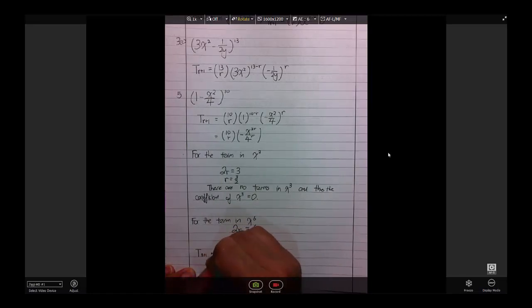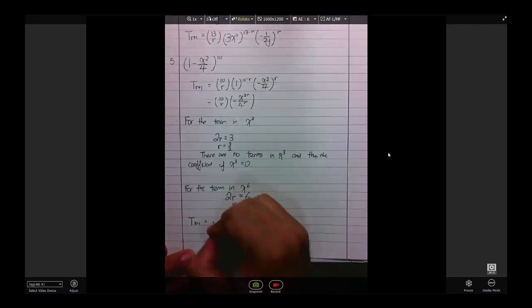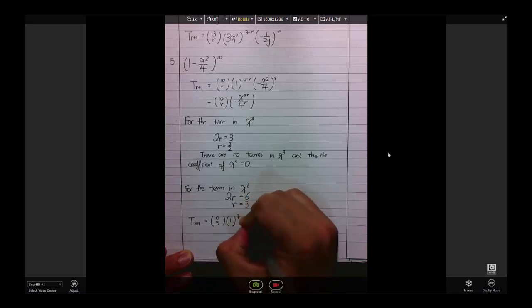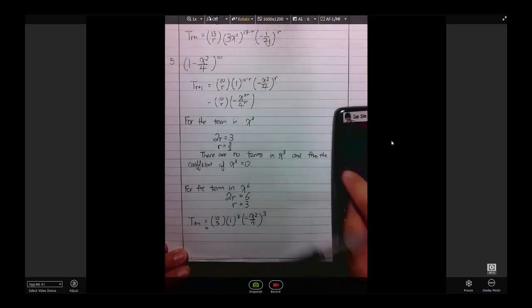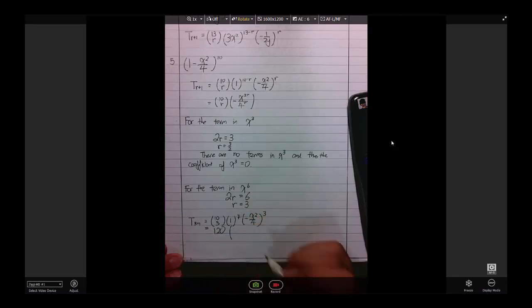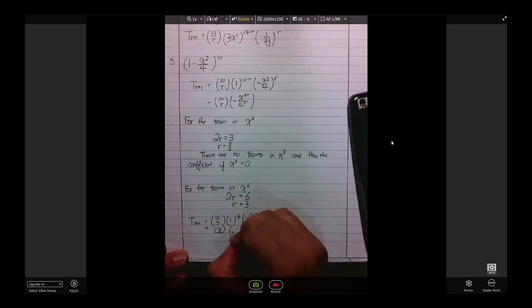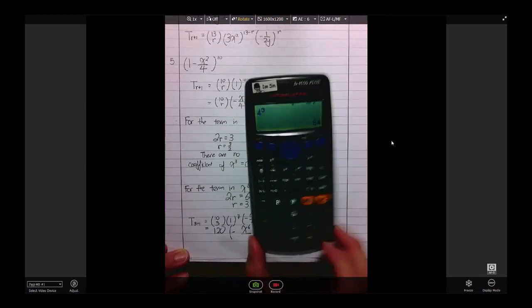t3 plus 1 is equal to, let me shift the camera a bit, t3 plus 1, we just substitute back into the formula here, 10 choose 3, 1 to the power of 10 minus 3 is 7, negative x squared over 4 to the power of 3. You simplify everything, 10 choose 3 is 120, 1 to the power of 7 is still 1, negative x squared, what we will get is negative to the power of 3, negative, positive, negative again. So, for odd numbers, it still remains, or odd powers, it still remains as negative x to the power of 2 times 3 is x to the power of 6, 4 to the power of 3 will give me 64.